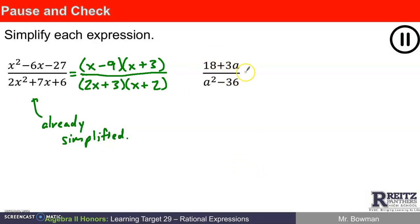This one, on the other hand, can be simplified some. 18 plus 3a over a squared minus 36, which can be written as a plus 6 times a minus 6.